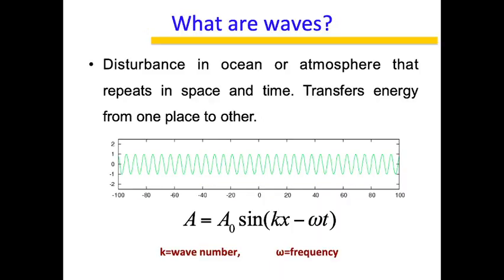So, first things first — what are waves? In very simple layman's language, waves are disturbances in the ocean or atmosphere that repeat themselves in space and time. And obviously they transfer energy from one place to another as they move in whichever direction they are supposed to. This drawing here is just a very simple schematic of a wave — it's a disturbance which has an amplitude and it just keeps moving from left to right.